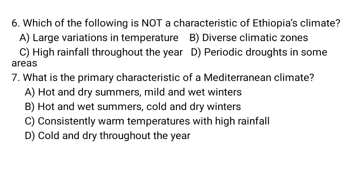Ethiopia's climate is known for having high variation in temperature — lowlands and highlands differ greatly. There are about five agro-climatic zones. Periodic droughts occur in some areas like Borana and Wallo. High rainfall throughout the year does not apply except in the south-western highland parts. So C is not a characteristic of Ethiopian climate.